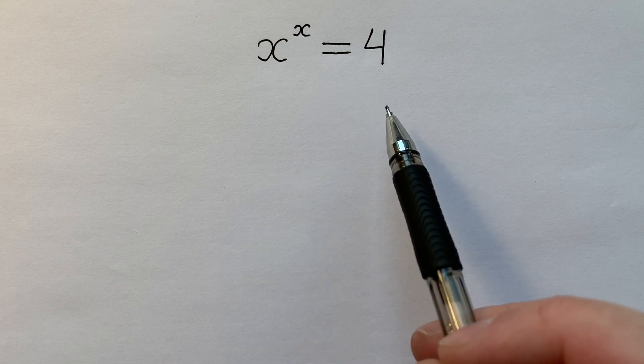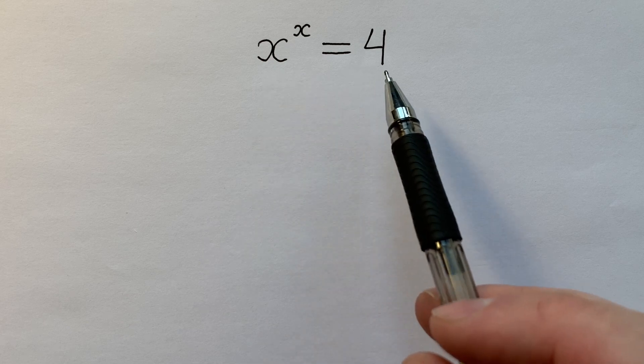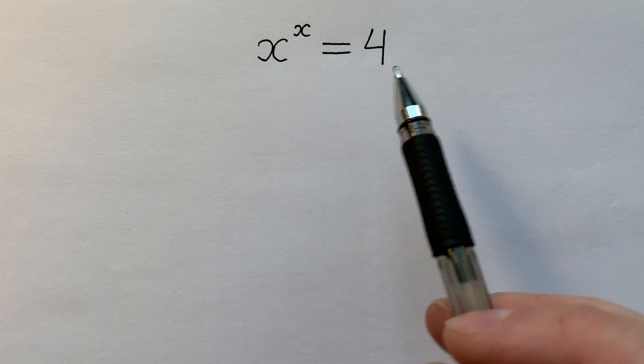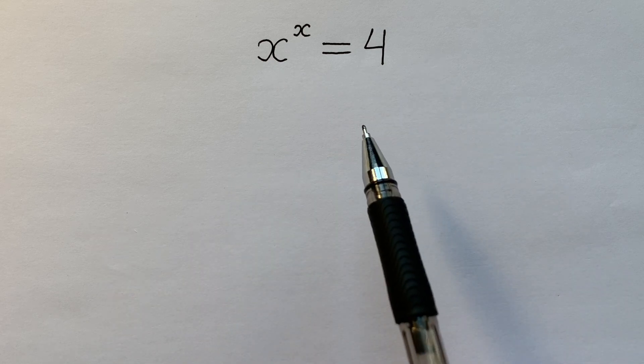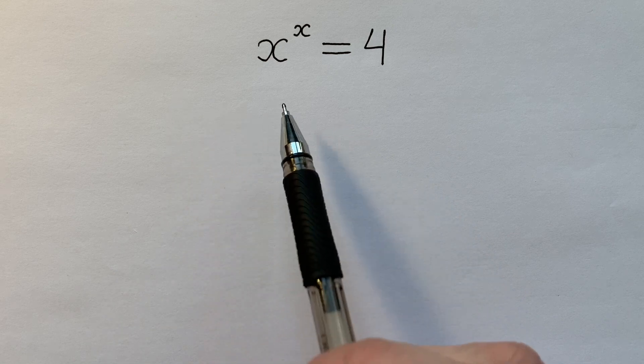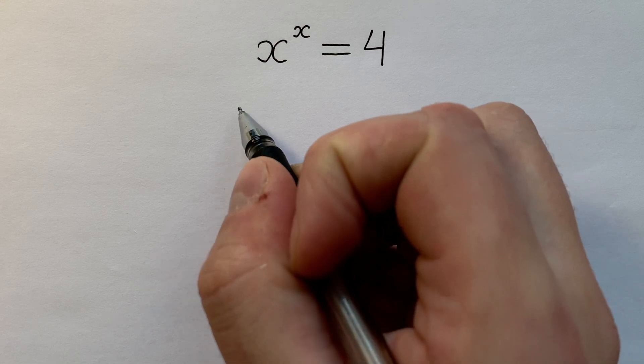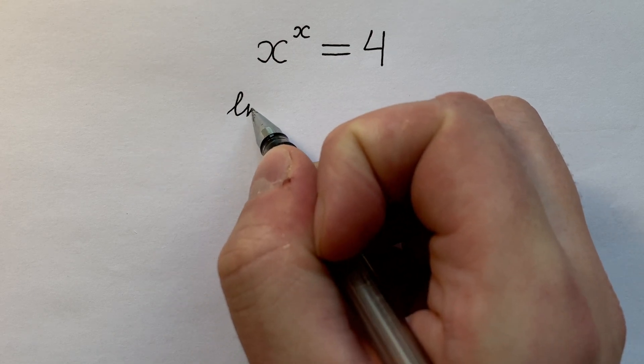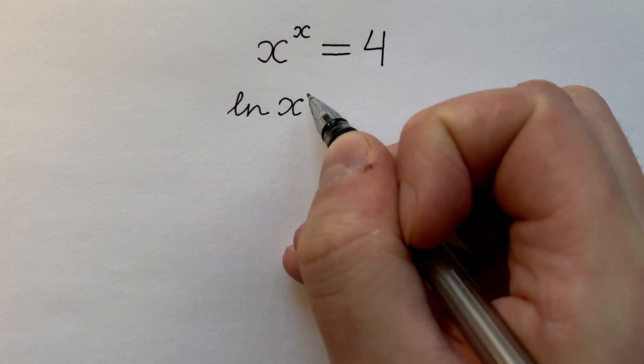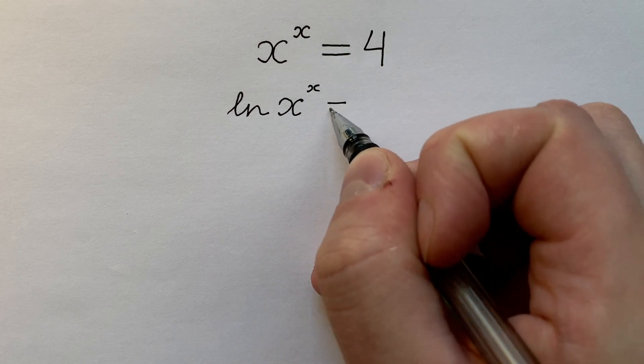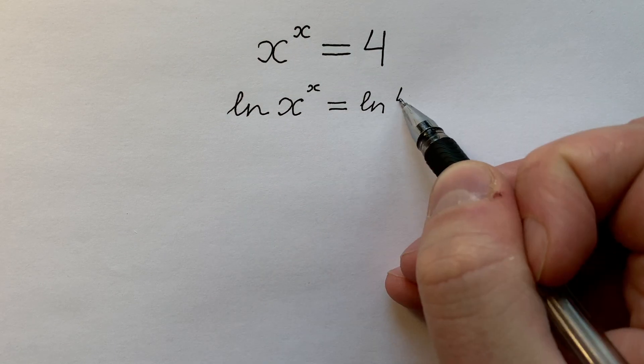At first sight, we understand that the left side and the right side of this equation are bigger than zero. So we can take a natural logarithm from left and the right sides. We have that natural logarithm x to the power of x equals to natural logarithm from 4.